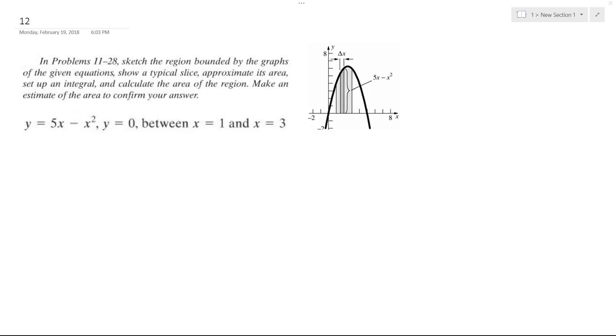So we want to find out what the area is enclosed between y equals zero and the graph of the equation 5x minus x squared, between x equals 1 and x equals 3, so everything in between here.